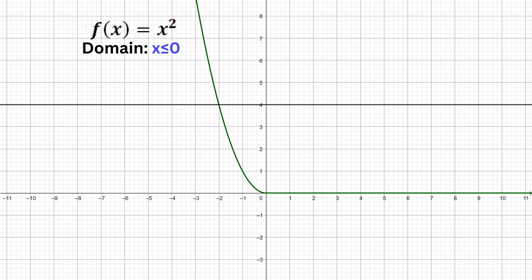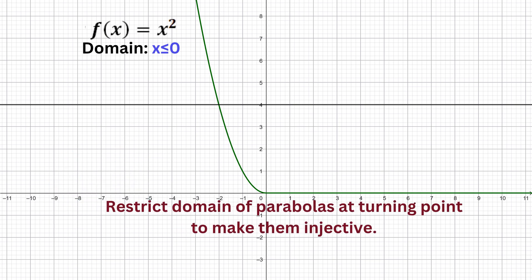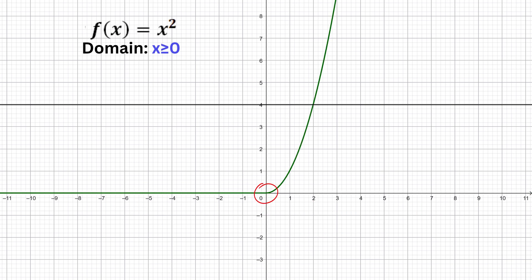The key idea is this: by limiting the domain or the x values, we remove the duplicate y values and make the function one to one. So even though the function is not injective across all real numbers, it can be injective on a restricted domain. For parabolas, we restrict the domain at the x-coordinate of the turning point. So in this case, either x greater than or equal to 0, or x less than or equal to 0. It all depends on which side of the parabola you choose to keep.